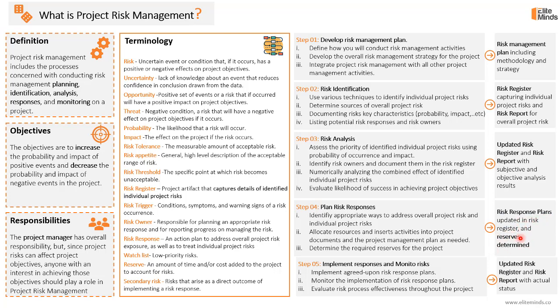The last step is implementing the responses identified in the previous step while simultaneously monitoring risks on the project. This includes implementing agreed-upon risk response plans, monitoring their implementation, and evaluating risk process effectiveness through risk audits and risk reviews. The outcome is an updated risk register and risk report with the actual status of risks on the project. That is project risk management in a nutshell. Visit our blog to learn more about risk management at the project, program, or portfolio level.